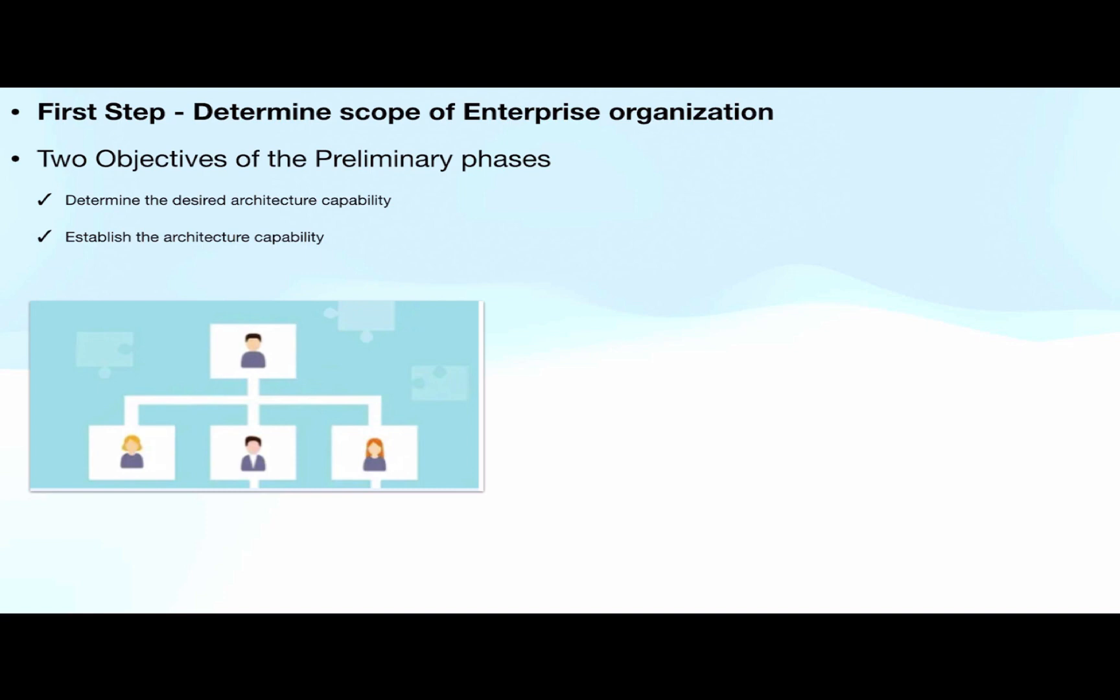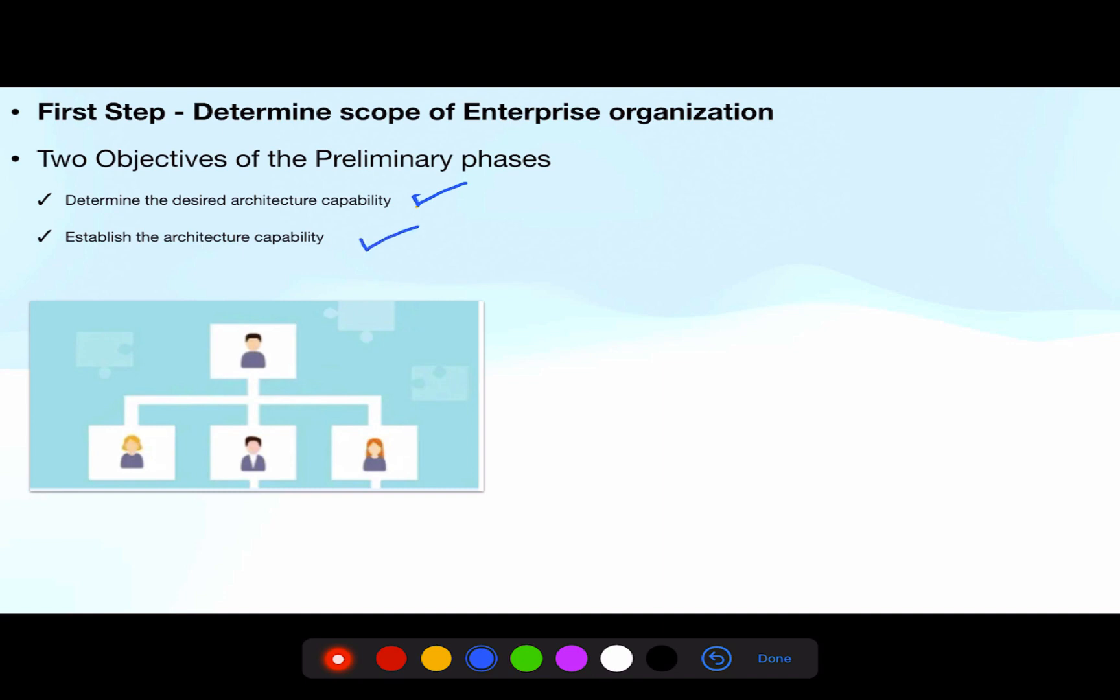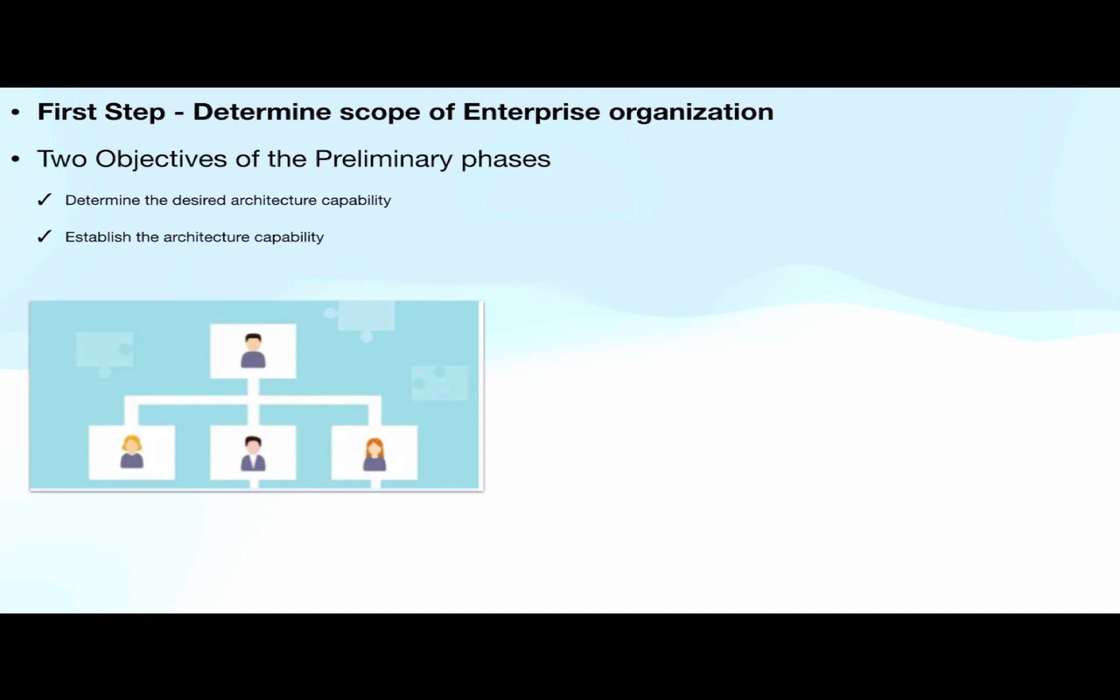We have seen earlier that preliminary phase has two objectives: one, to determine the desired architecture capability, and the second, to establish the architecture capability. So the first step of the preliminary phase is to determine the scope of the enterprise organization and what other units or sections of the enterprise organization are impacted.